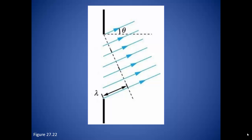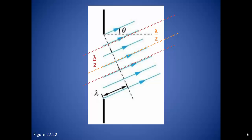Let's say we have rays traveling at some angle theta, and the bottom ray is traveling exactly one wavelength further than the ray at the top. Then the ray at the center must be traveling exactly one half wavelength further than the ray at the top, meaning the center ray and the top ray are out of phase by exactly one half wavelength. So when they meet at the screen, they destructively interfere, forming a dark fringe. The ray just below the top ray and the ray just below the middle ray are also one half wavelength out of phase and will destructively interfere. This keeps on going, and we end up with many dark fringes formed on our screen.